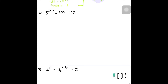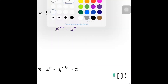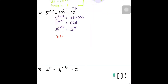Let's look at the next question. We have 500, 125, and 5^(2x+2). I move the 500 to the right-hand side and get 125 + 500 = 625. So 5^(2x+2) = 625, and 625 is 5 to the power of 4. I can cancel the base and get 2x + 2 = 4, so 2x = 2 and x = 1. Done.